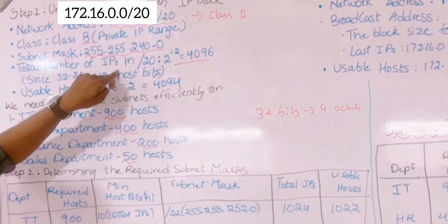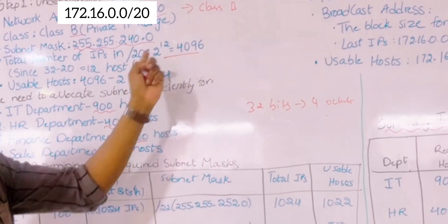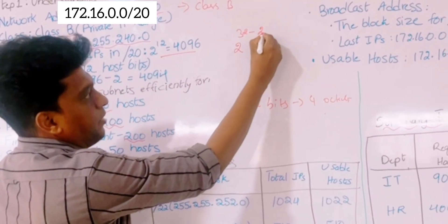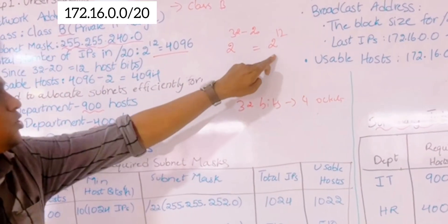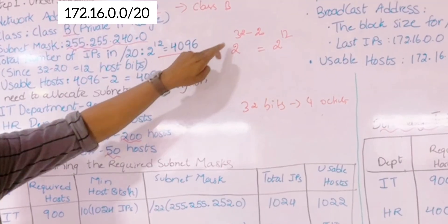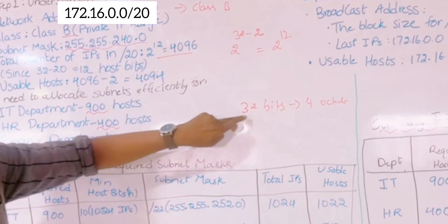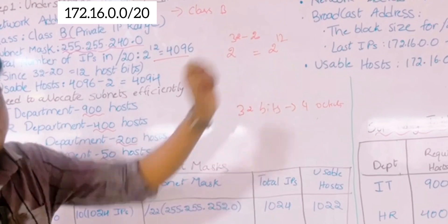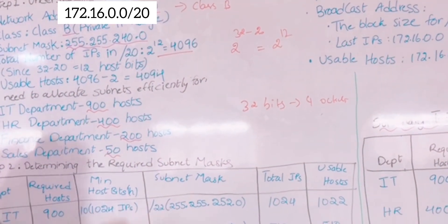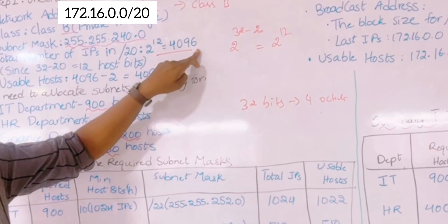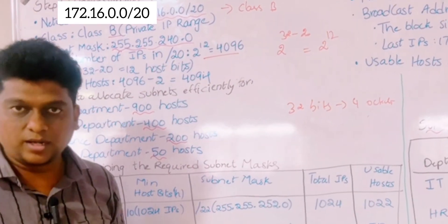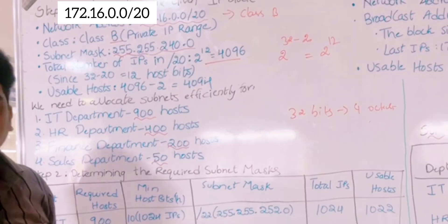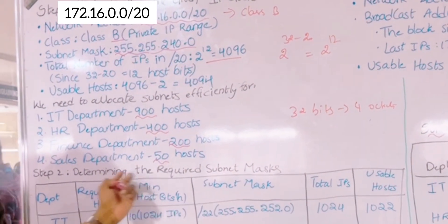The total number of IPs in this /20 subnet is defined by 2 to the power of 32 minus 20, which equals 2 to the power of 12, giving us 4096 IPs. Among these 4096, we subtract 2 — one for the network address and one for the broadcast address — leaving 4094 usable hosts.